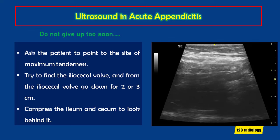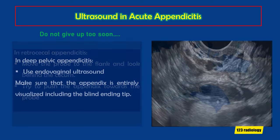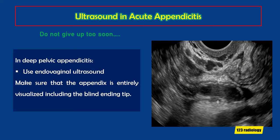Compress the ileum and cecum to look behind it. In retrocecal appendicitis, move the probe to the flank and look behind the cecum, or try to push the appendix towards the probe by placing the other hand in the flank and pushing anteriorly. In deep pelvic appendicitis in women, you can use endovaginal ultrasound. Make sure the appendix is entirely visualized, including the blind-ending tip, because if you have tip appendicitis you will miss it if you don't visualize the entire appendix.